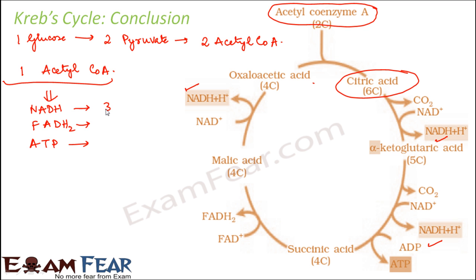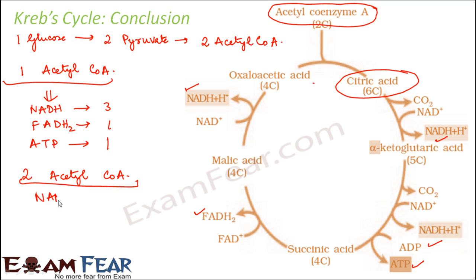For one acetyl coenzyme A going through the Krebs cycle: NADH is formed at three places, so three molecules of NADH are formed. FADH2 is formed only once, giving one molecule. ATP is also formed once — via GTP, one molecule of GTP yields one molecule of ATP. So with two acetyl coenzyme A: six NADH, two FADH2, and two ATPs are formed.